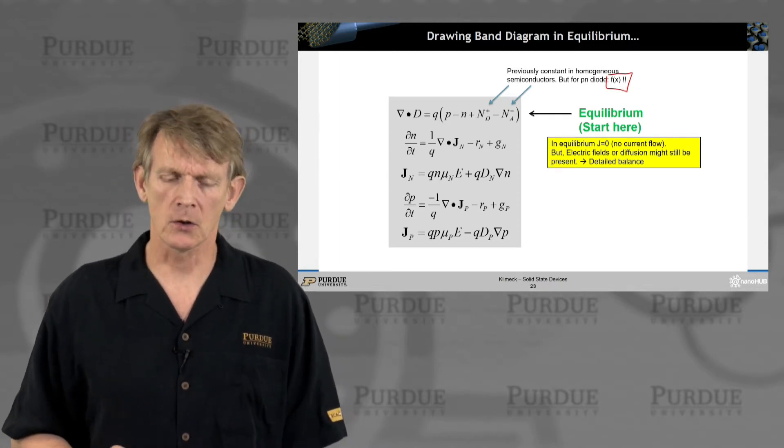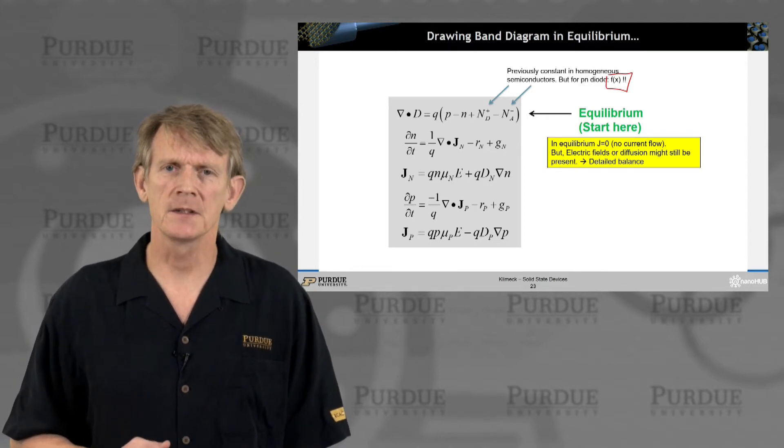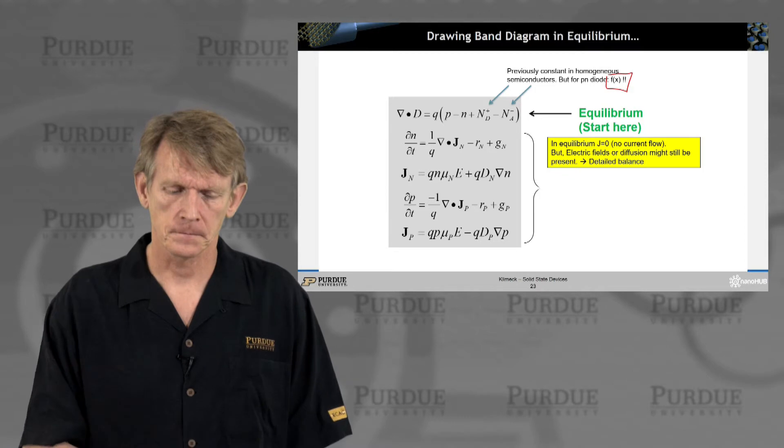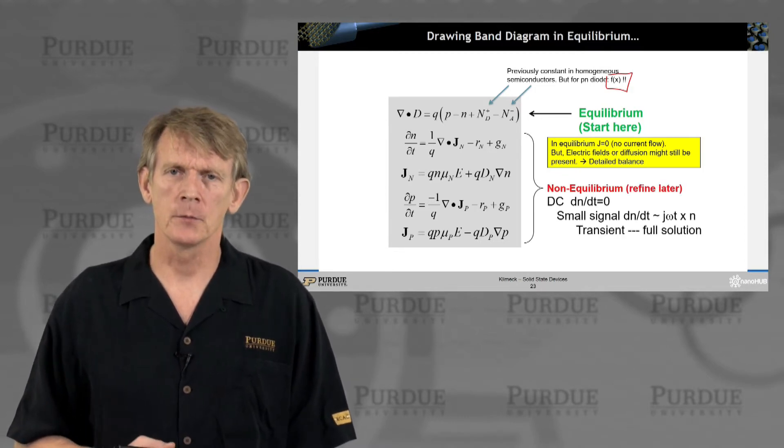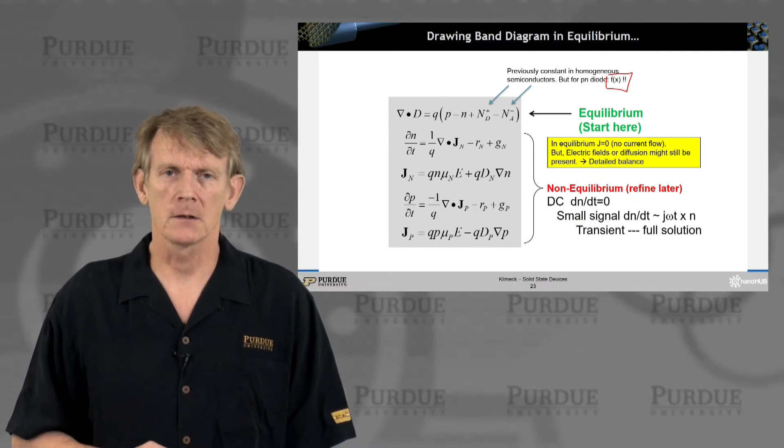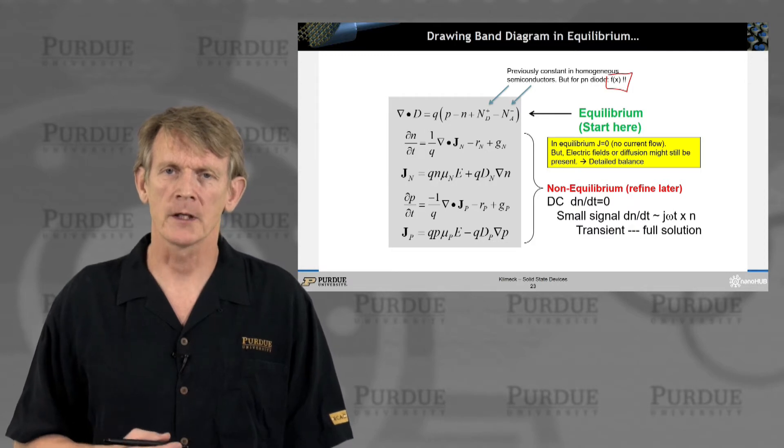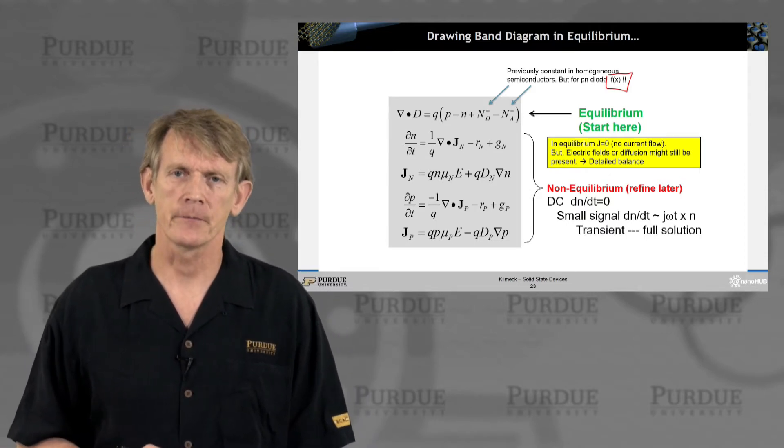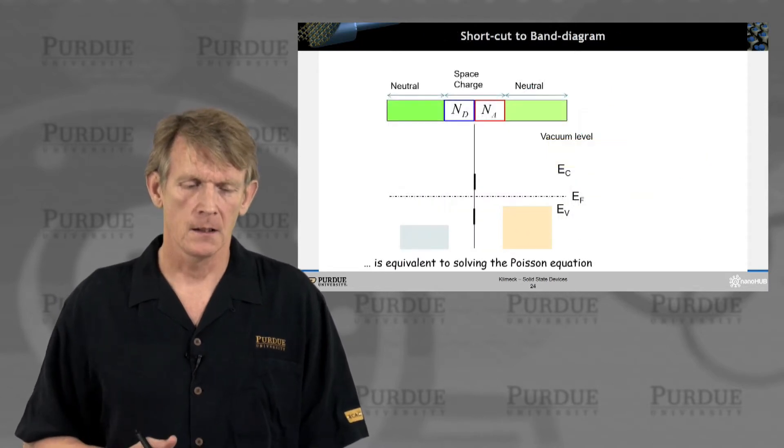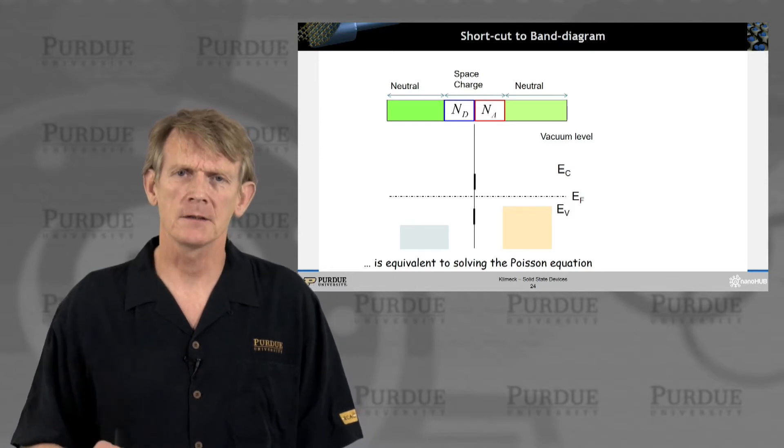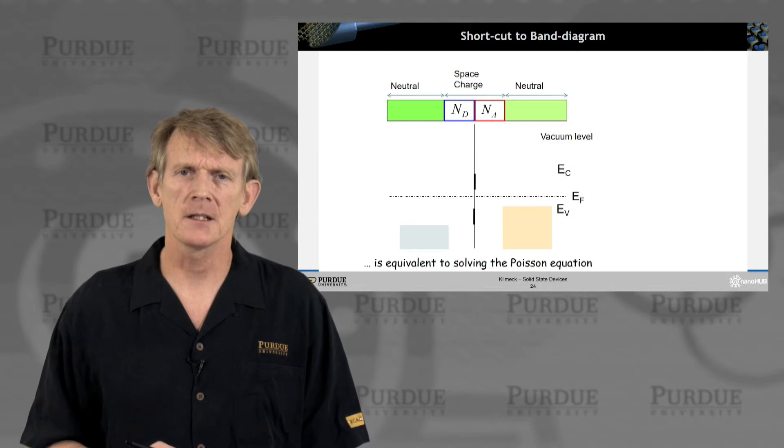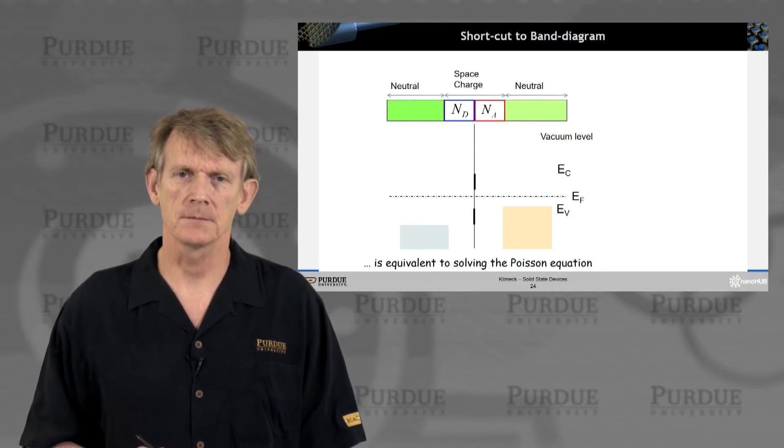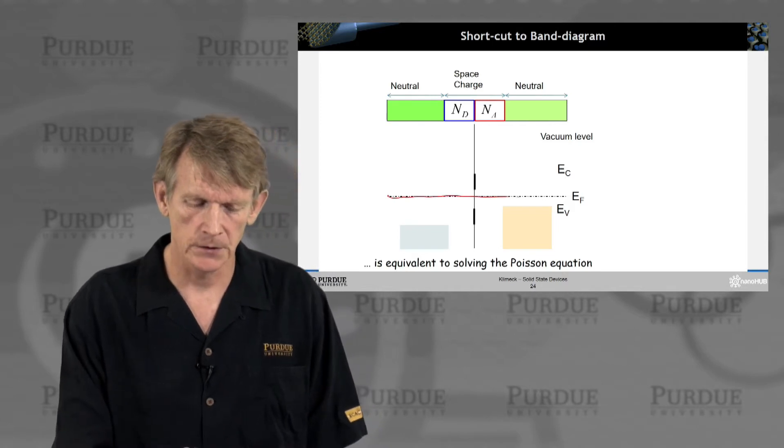We start from here in equilibrium, where there is no current flow. We will start from detailed balance, and if that's the case, we will always draw a flat Fermi level. When we go into non-equilibrium, where there are DC, like we are applying a constant voltage and looking at the current, or when we have time dependence or small signal, we will perform solutions to the problem in a later section. Here we're just going to look at equilibrium.